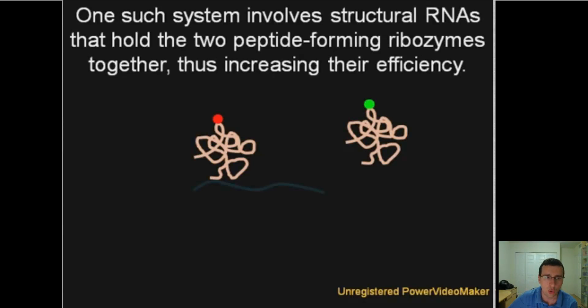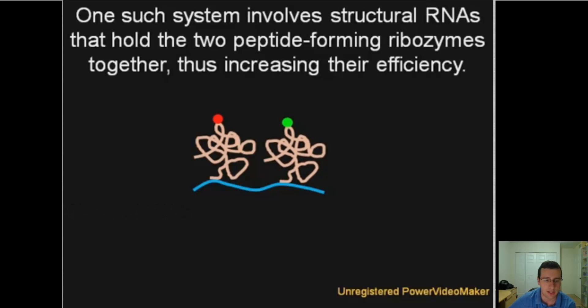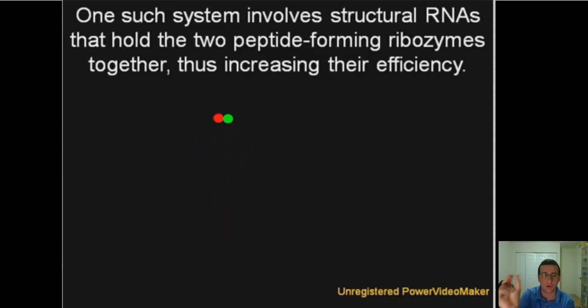One hypothesis for a mechanism that could do this involves a structural RNA that could hold the two ribozymes in charge of forming the peptide bonds together. Because once that structural RNA is holding those peptide bonds together, it can even then bring them even closer together, making sure that the peptide chain is going to be formed more efficiently.